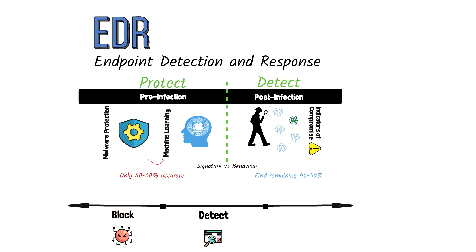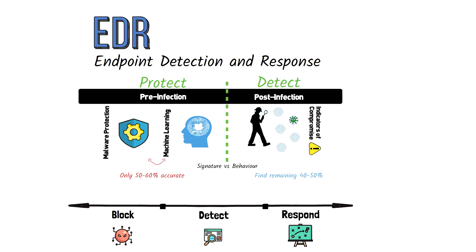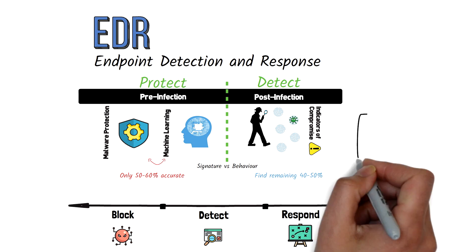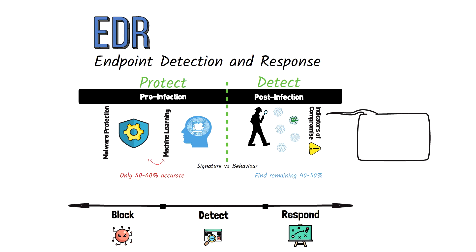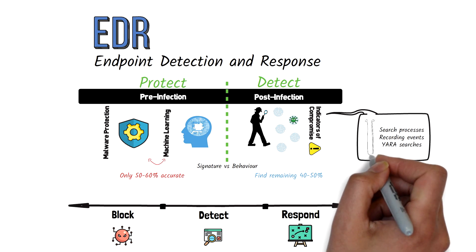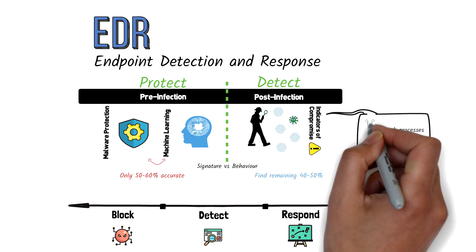Next, we move on to the response stage, which is where we automate playbooks and quarantine users, isolate devices, or rollback changes depending on what our playbooks may dictate. A key component of the EDR process is the ability to use forensics to facilitate the threat hunting process. This could be as simple as searching your EDR clients for a YARA rule or a specific process, or combing through recorded events on the endpoint itself. This can vary from vendor to vendor, but most EDR tools record forensic data when the file passes the pre-execution phase.